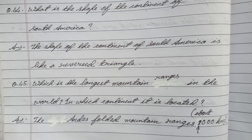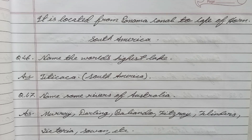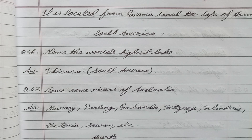Question 45: Which is the longest mountain range in the world? In which continent is it located? Answer: The Andes — the endless folded mountain ranges. It is located from the Panama Canal to Cape Horn, South America. Question 46: Name the world's highest lake. Answer: Titicaca.